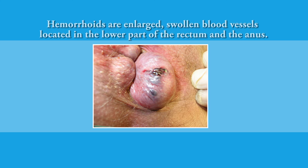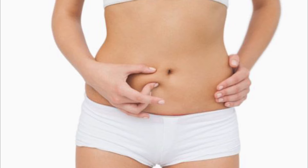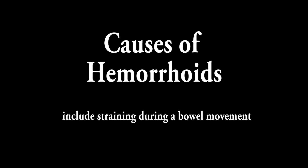Hemorrhoids are enlarged and swollen blood vessels located in the lower part of the rectum and the anus. The blood vessels become swollen due to increased pressure within them. They are caused by increased pressure within the lower abdomen.